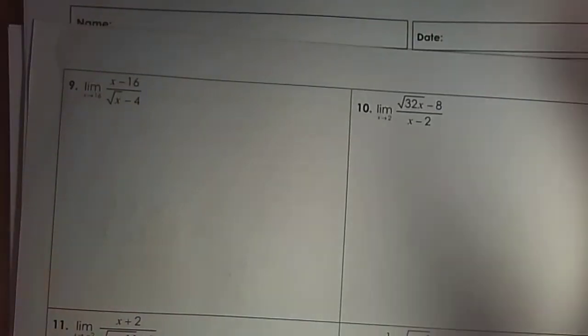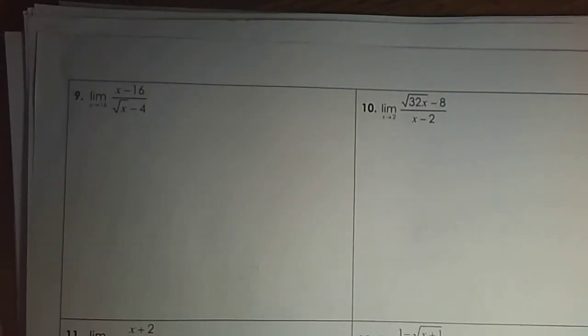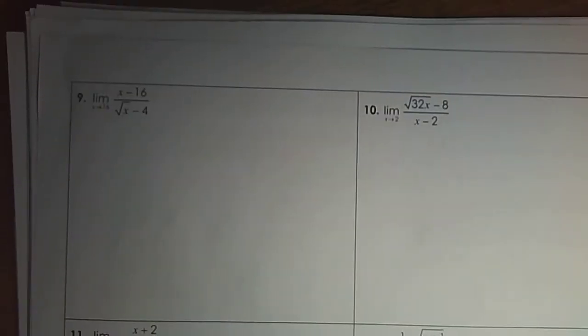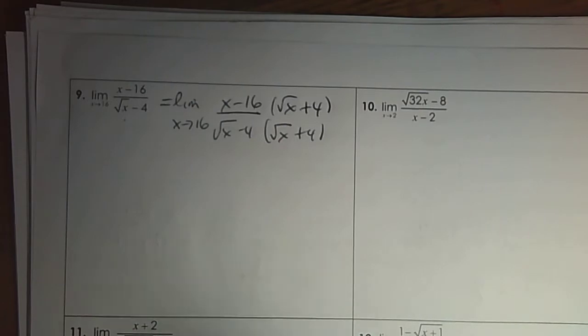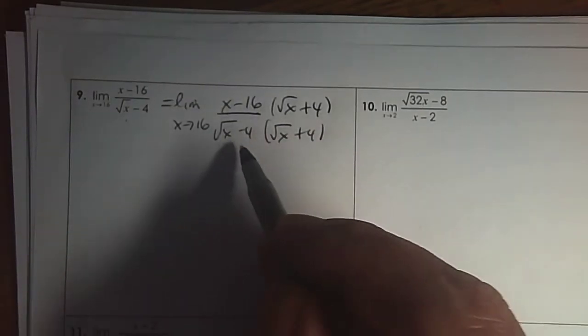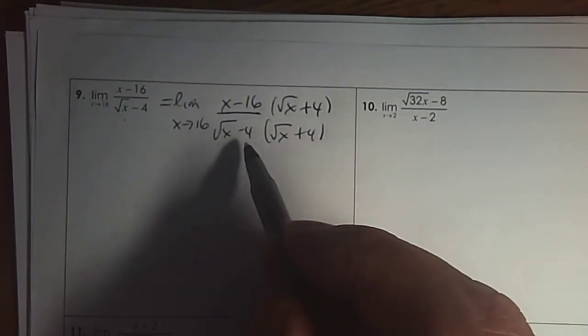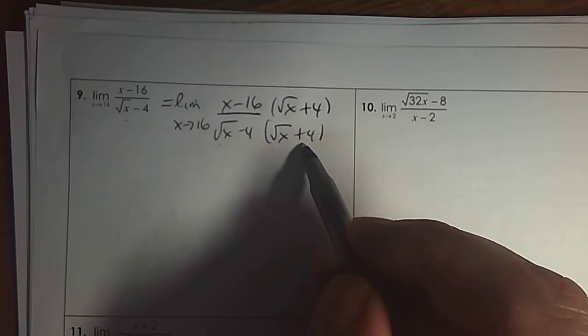Turn the page over. Now on this page, we're going to practice using the conjugate so that I can simplify. So if I plug in 16, it's indeterminate. So I'm going to write down this, but I'm going to multiply top and bottom by the square root of x plus 4 — that's the conjugate with the square root.